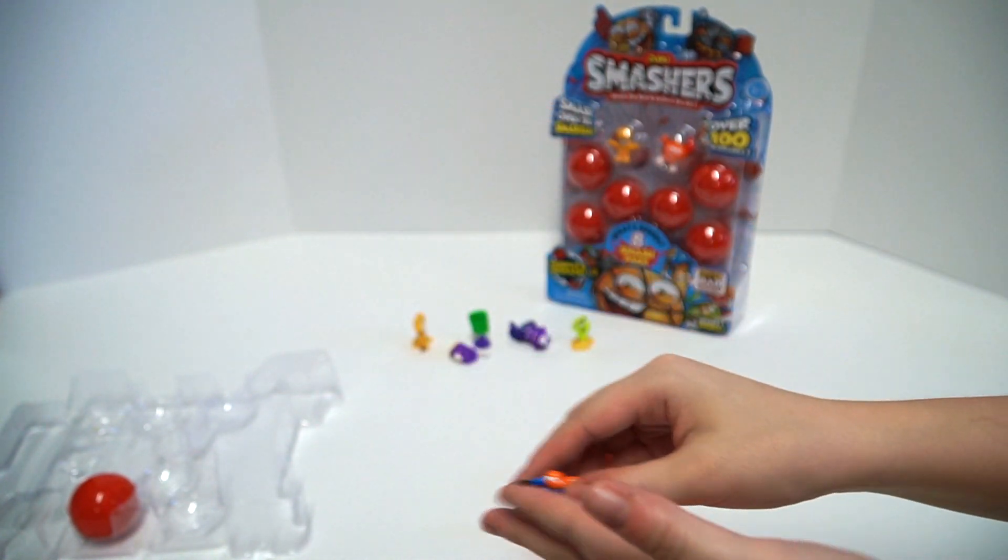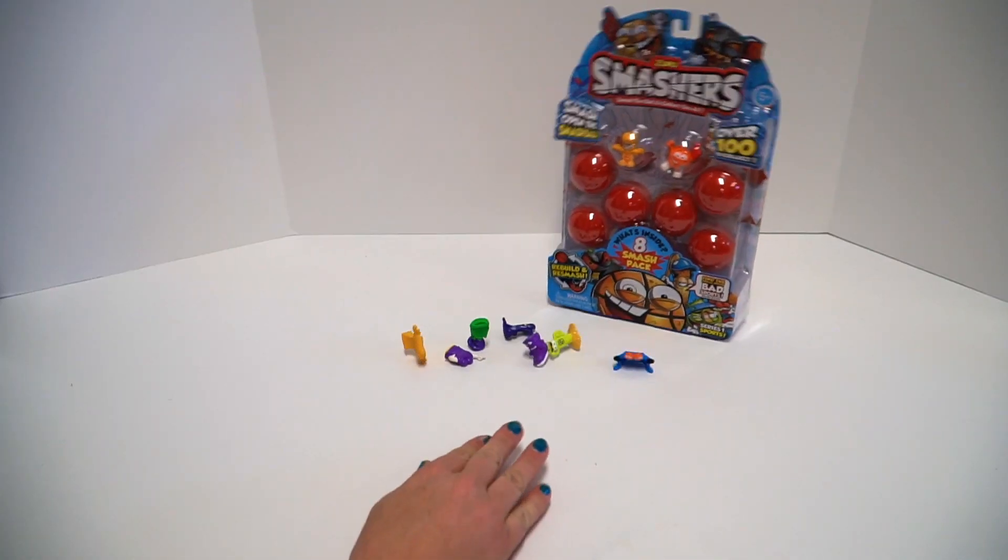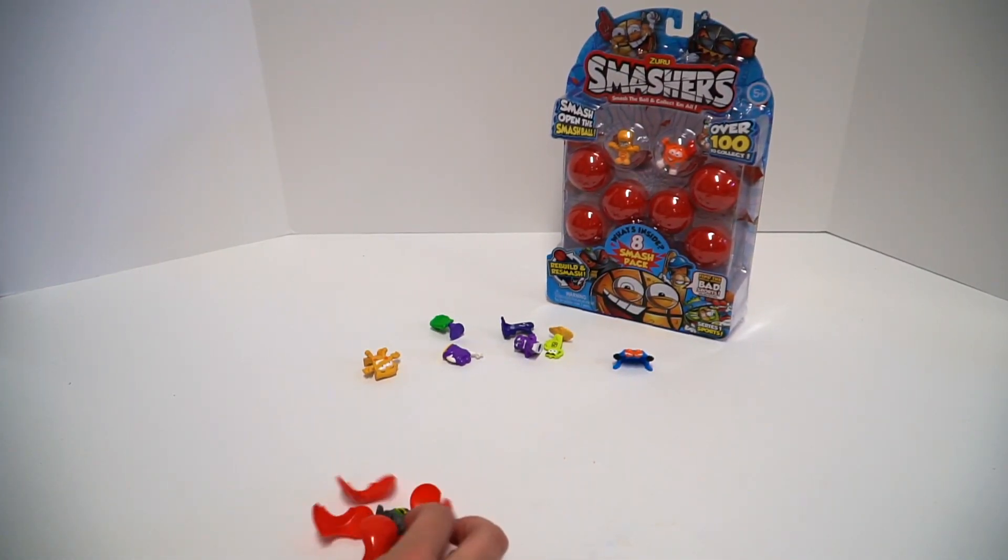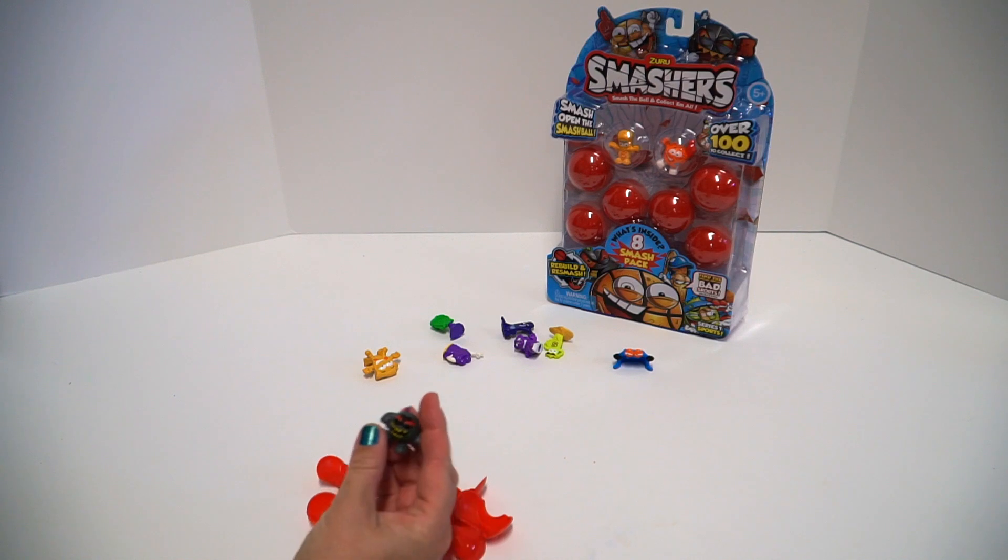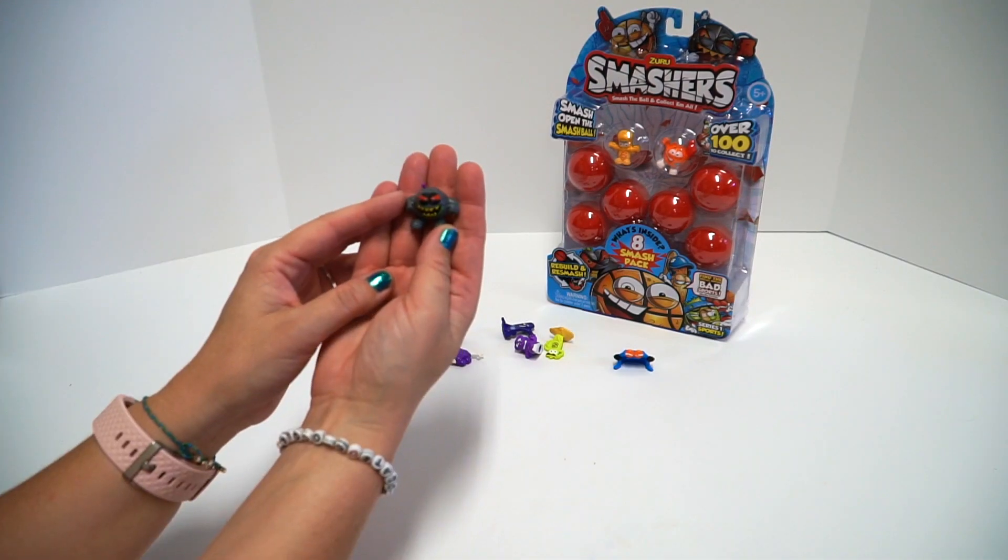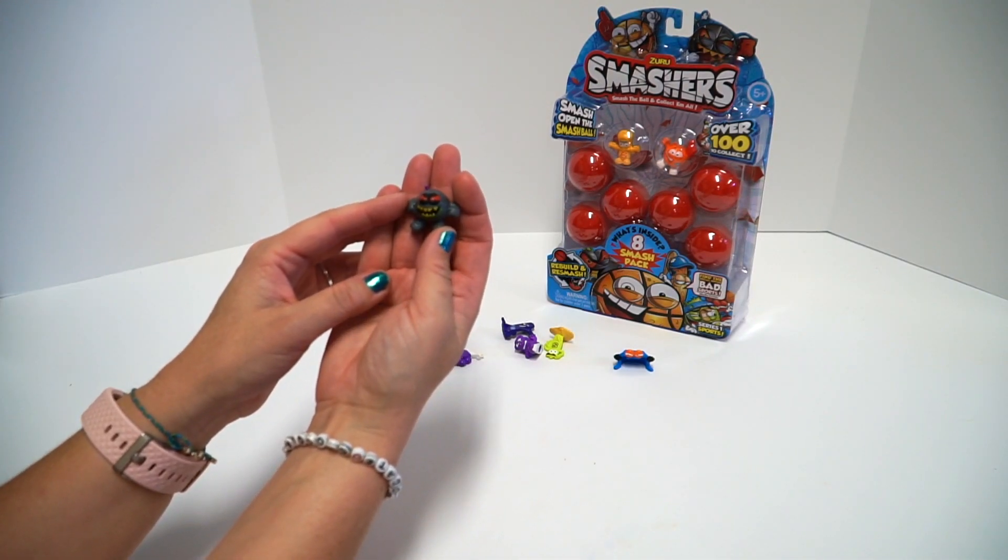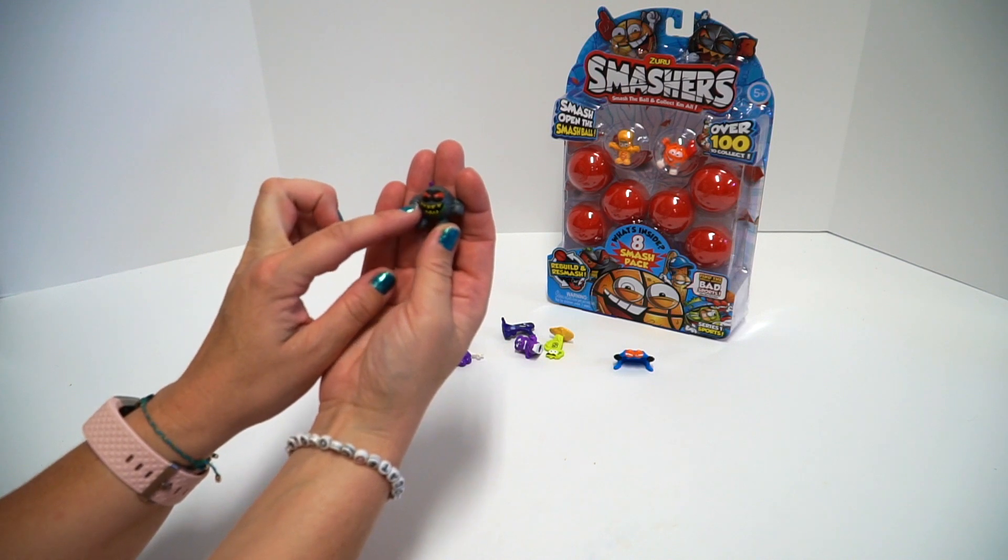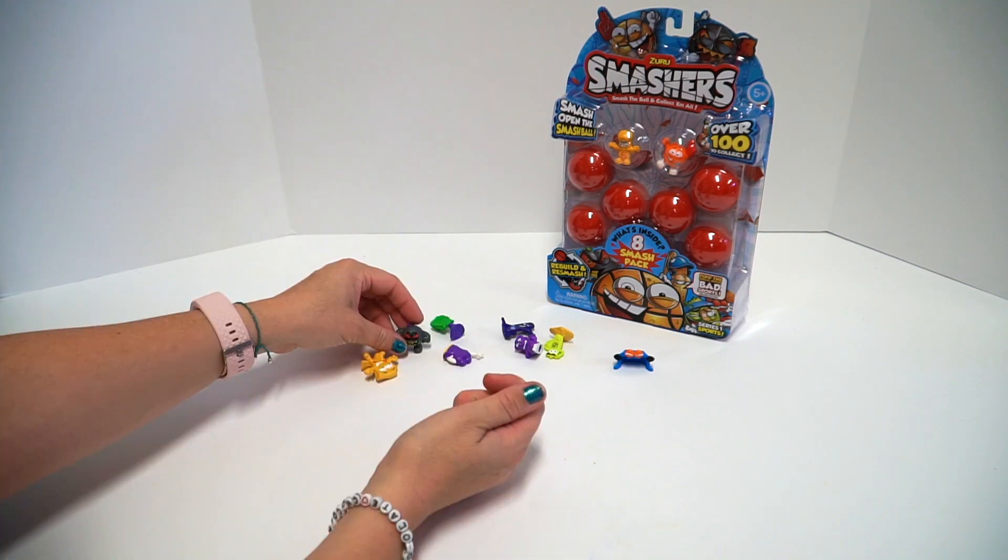All right, your turn. Oh wow, look at this. Oh, he's cool. This is Foul and he is super cute. He's got kind of a wicked smile, red eyes. Oh yeah.